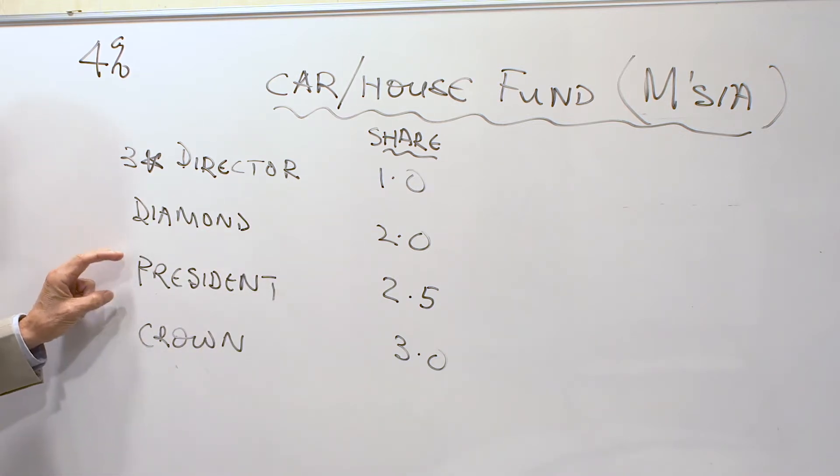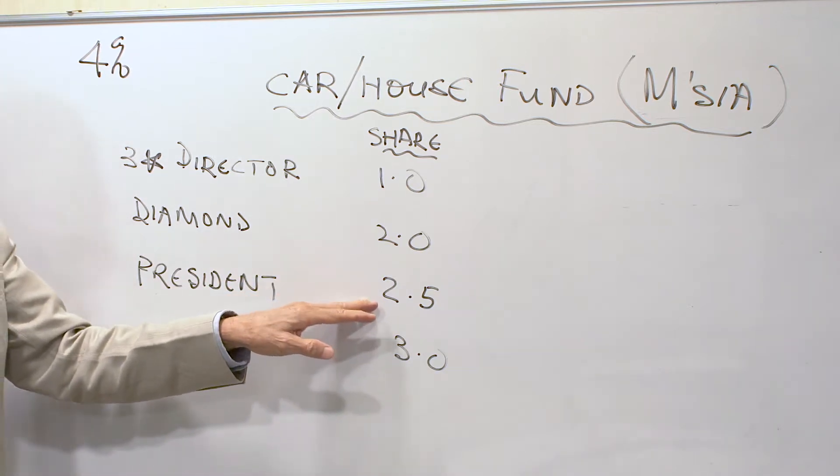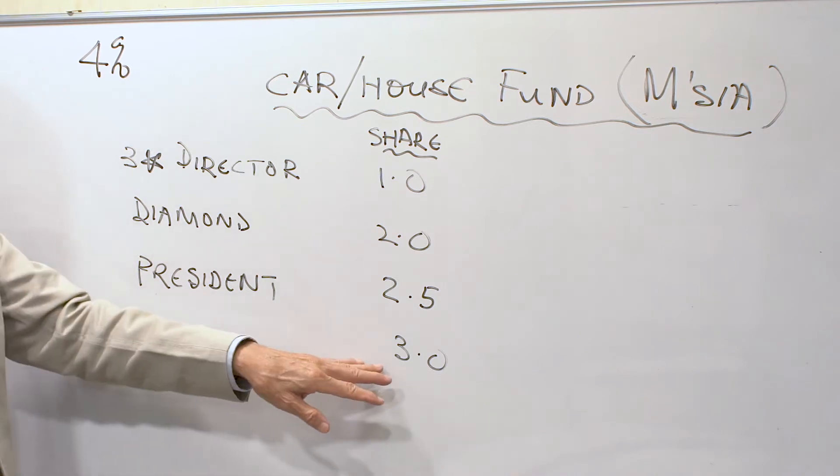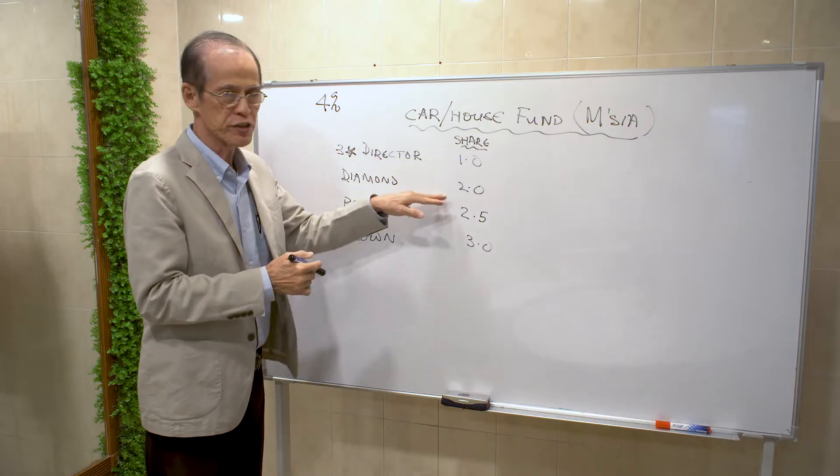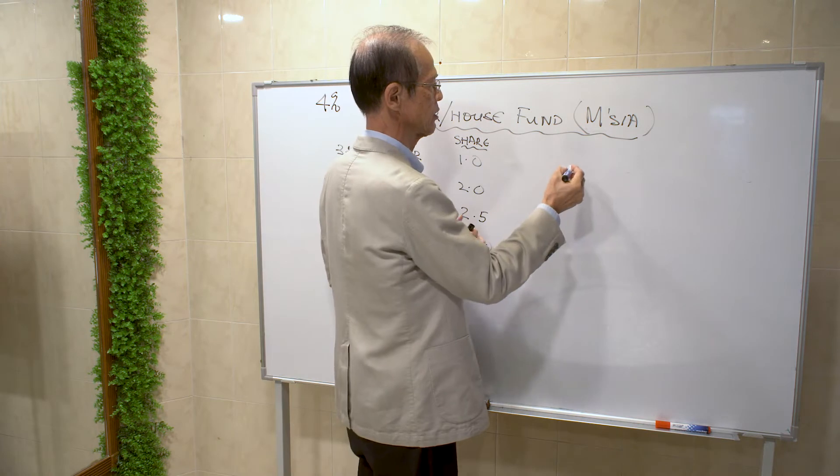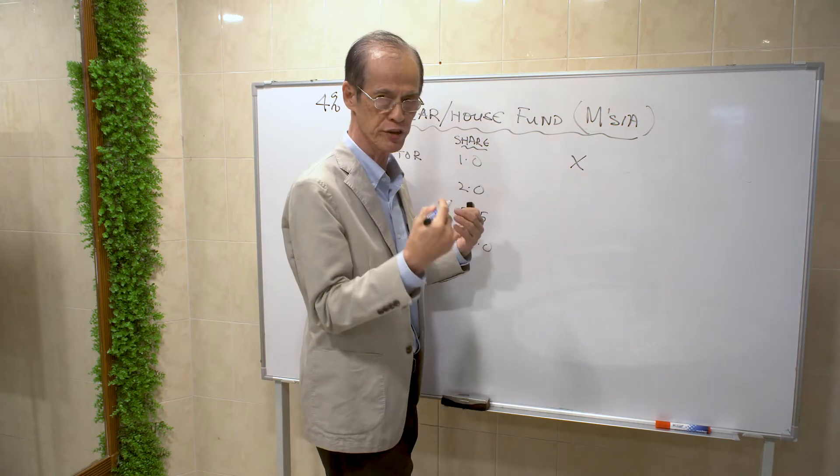In the president zone—president, two-star president, three-star president—you get 2.5 shares. And for crown, in the crown zone, three shares. For the number of shares that you have, let's say you just have X number of shares.